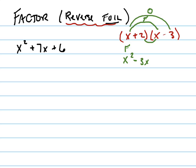Then I do the inside, that's positive 2x, and then I do the last. That's negative 6. So here's l, and here's i. And then I took the o and the i, because they're like terms, and I add them together.